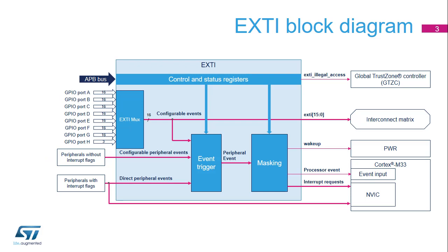This is a block diagram of the Extended Interrupt and Event Controller. Configurable peripheral events are generated by peripherals without interrupt capability, but which are able to issue a pulse. The eXTI controller provides interrupt detection, masking, and software trigger. Direct peripheral events are generated by peripherals supporting interrupt requests. In this case, the eXTI controller is used to generate events to the CPU and to request system wake-ups.